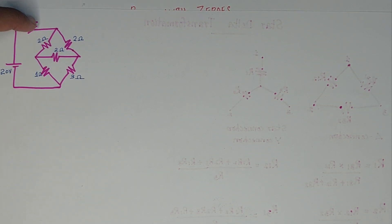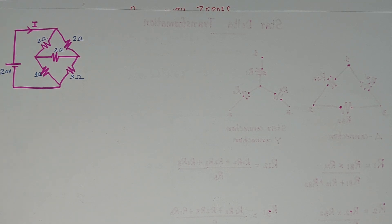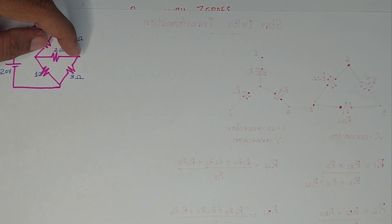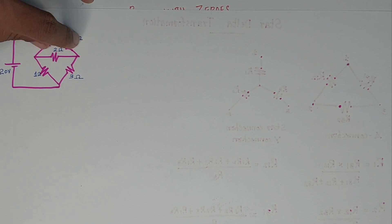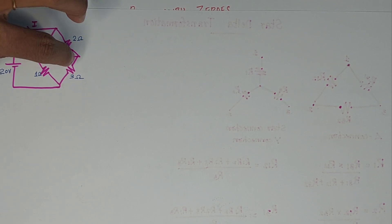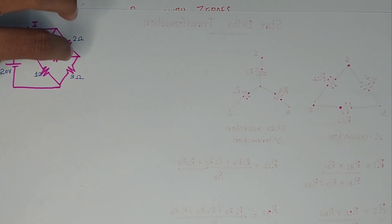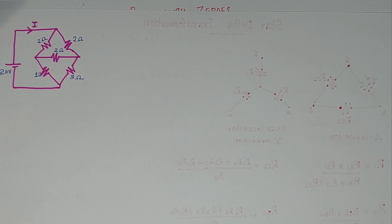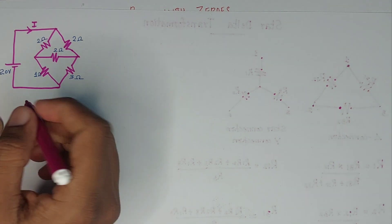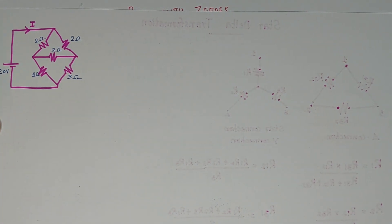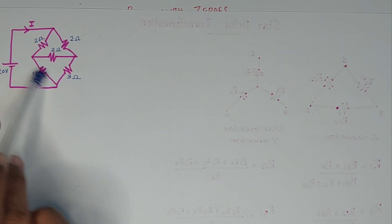This is the first step. I do a formula for the series combination. It's all different — series and parallel. Let's realize how you can solve this. If we are using star-delta transformation, then we choose a delta in the circuit.